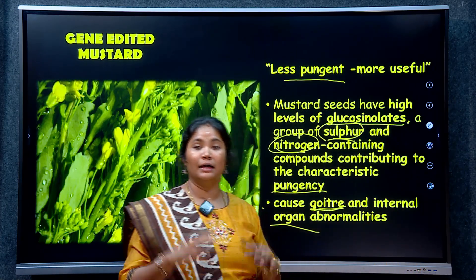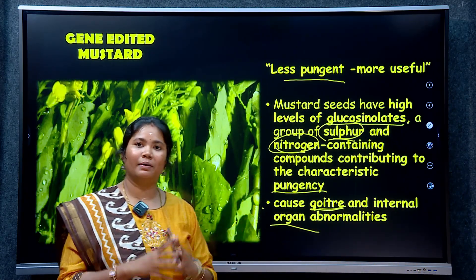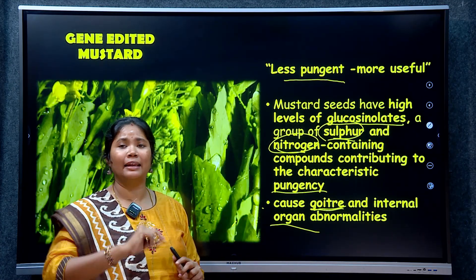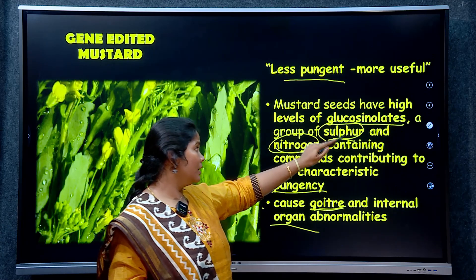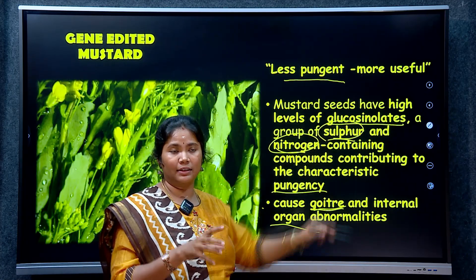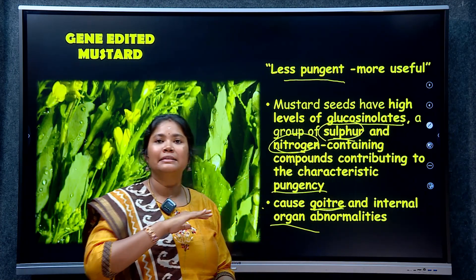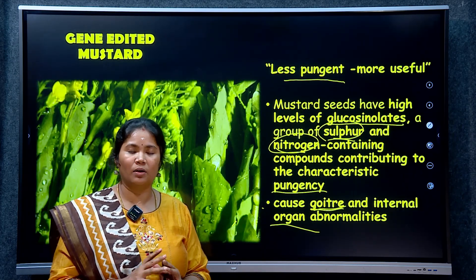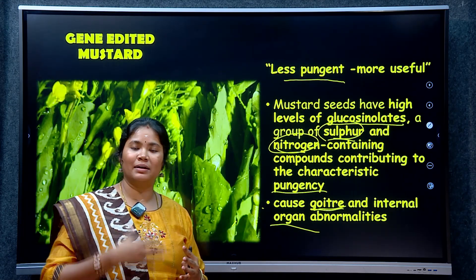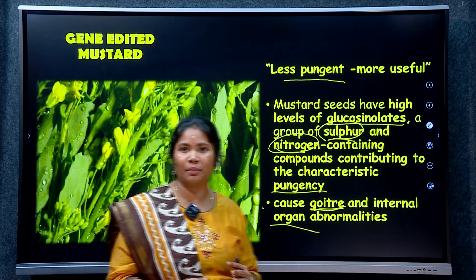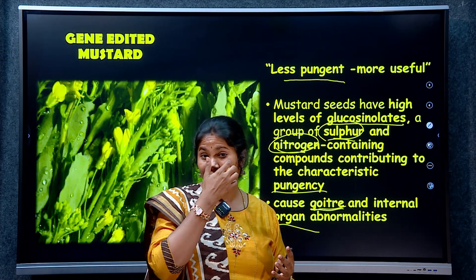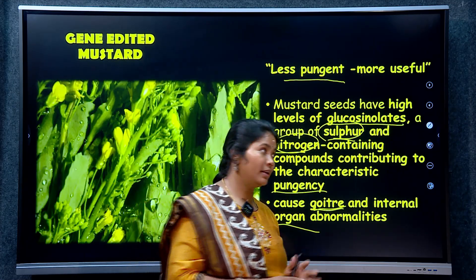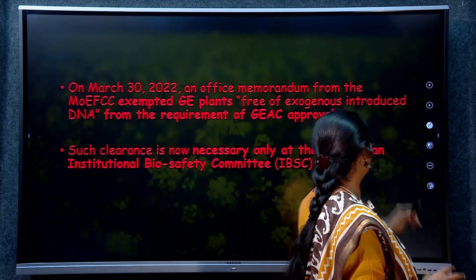To solve this problem, gene-edited mustard was developed. Using CRISPR-Cas9, the particular gene responsible for glucosinolate production is silenced. If this is done, the mustard becomes palatable and additionally the cattle fodder can be safely provided to animals.